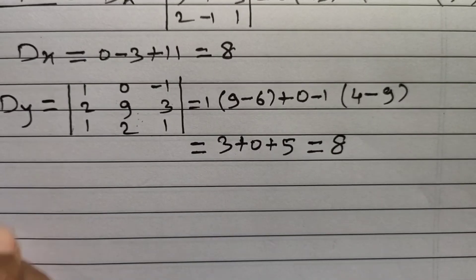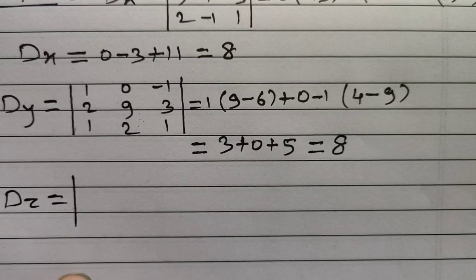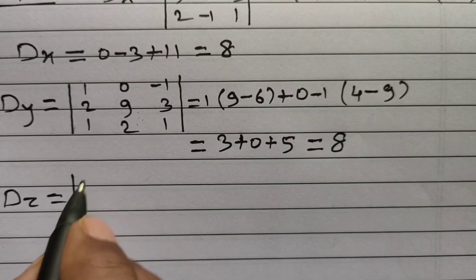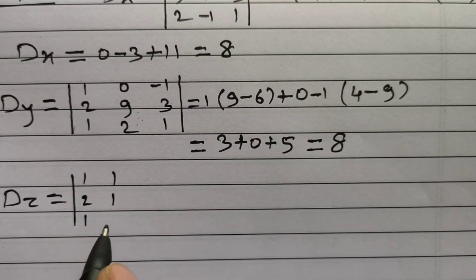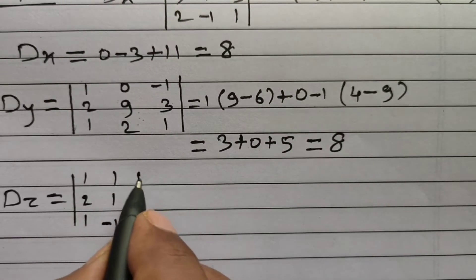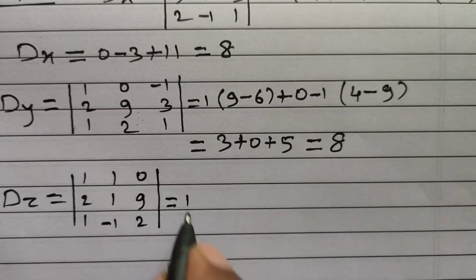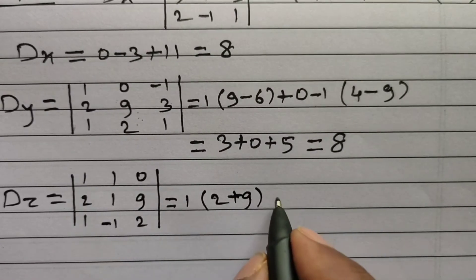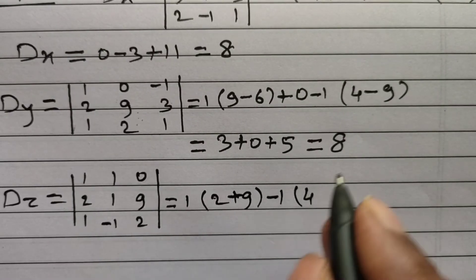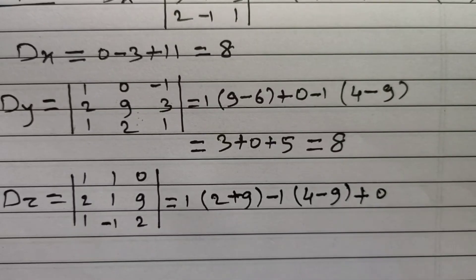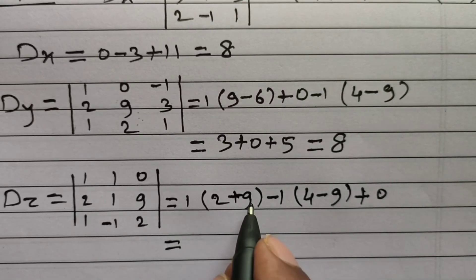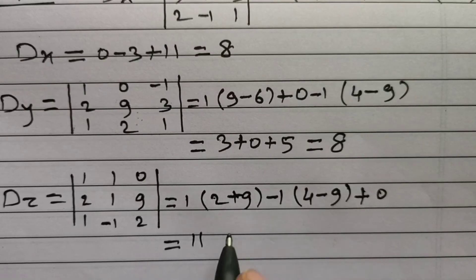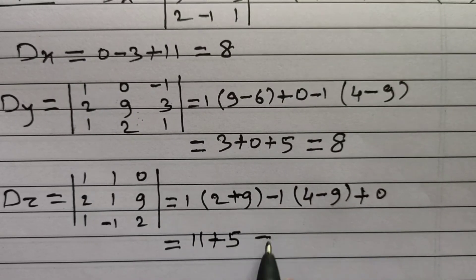Now let us find Dz. Dz is the determinant obtained by replacing the third column with the column matrix of constant terms. So the first two columns remain as 1, 2, 1 and 1, 1, minus 1; and the third column becomes 0, 9, 2. Expanding: 1 into (2 plus 9), minus 1 into (4 minus 9), plus 0. This gives 11 plus 5 plus 0, which equals 16. So Dz is equal to 16.